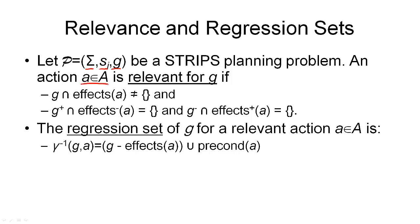Then we can say an action A of our action set is relevant for goal G if the following two conditions hold. Firstly, the goal intersected with the effects of the action must not be empty. This means there must be an element that is in both sets — an element that is on the one hand a goal and on the other hand an effect of the action. This means the action must contribute to the goal in some way.